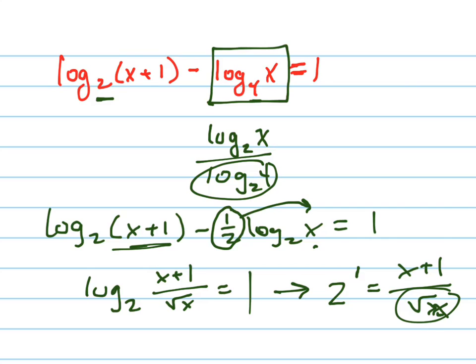And now I'm going to multiply both sides by root x. So 2 root x equals x plus 1. Now I'm going to square both sides. So I've got 4x equals x squared plus 2x plus 1.